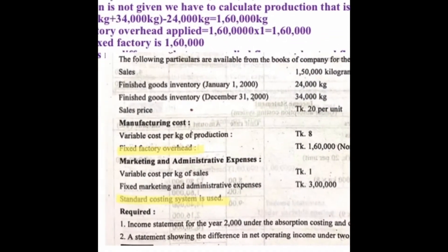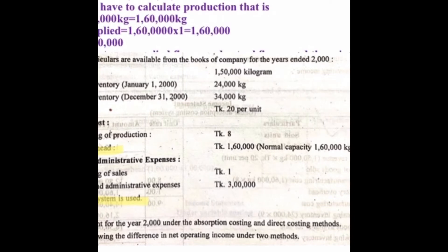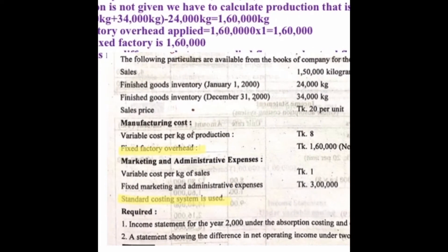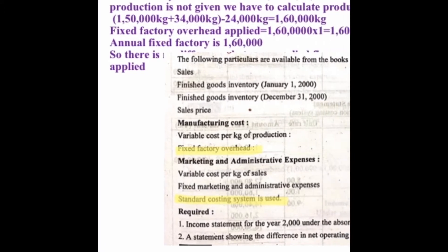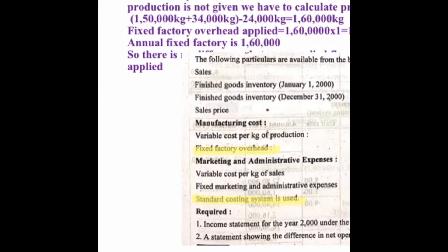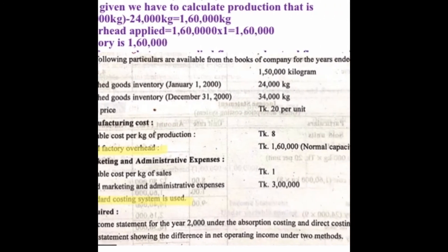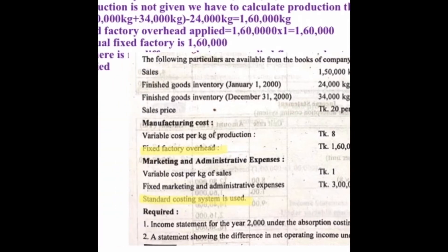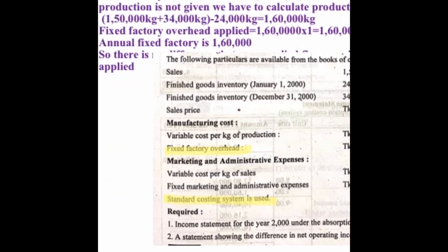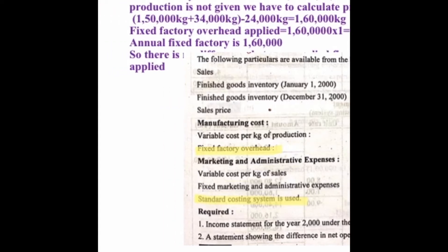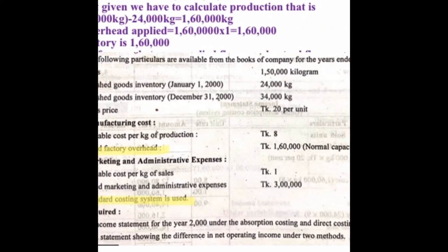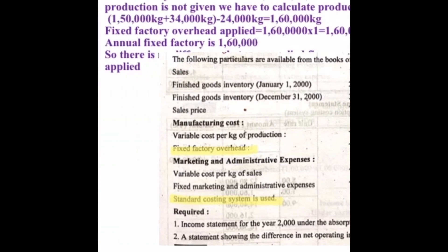Here is another problem. Fixed factory overhead is 1,600,000, normal capacity is 1,600,000, and the rate is Taka 1 per unit. This is an interesting problem — production is not given, but we calculate production as 1,600,000, and normal volume or normal capacity is also 1,600,000. So there is no difference in volume between actual production and budgeted production or normal capacity, therefore there will be no variance or under applied or over applied fixed factory overhead.